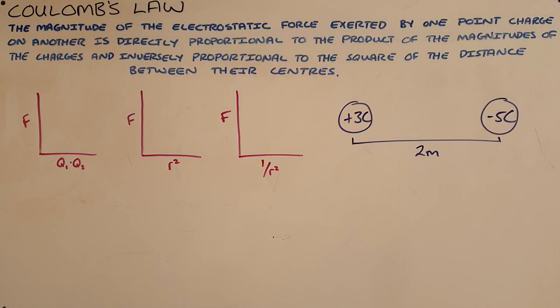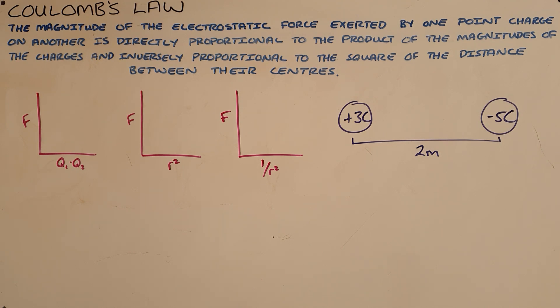Coulomb's law states that the magnitude of the electrostatic force exerted by one point charge on another is directly proportional to the product of the magnitudes of the charges and inversely proportional to the square of the distance between their centers.